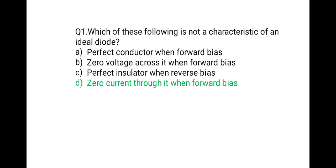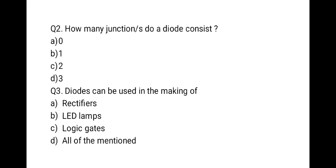The next question is: how many junctions does a diode consist of? A PN junction diode has one junction. It is formed when P-type and N-type semiconductors are connected together, forming one PN junction.